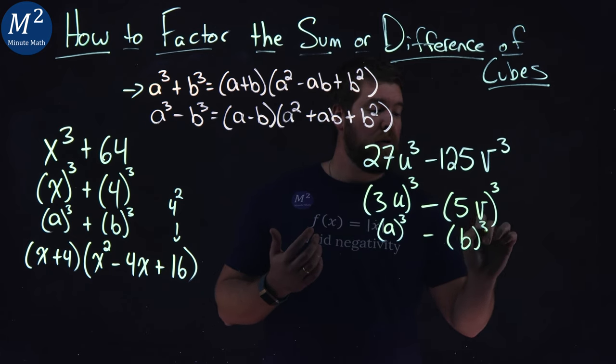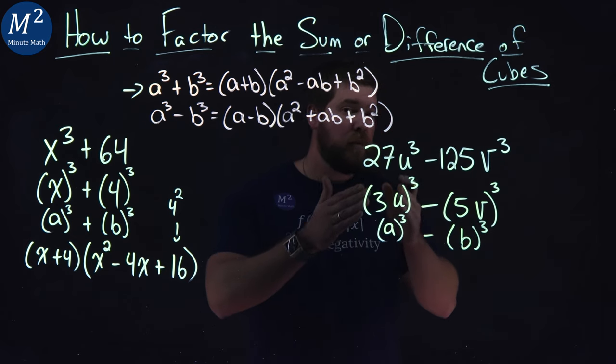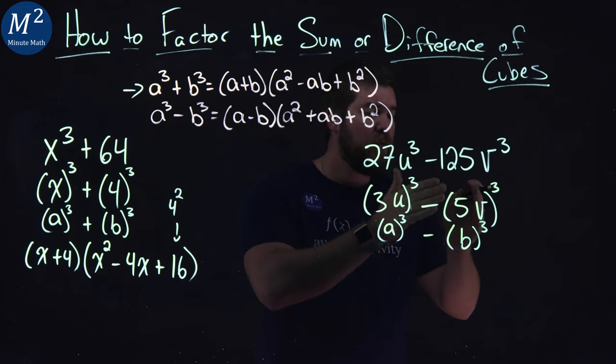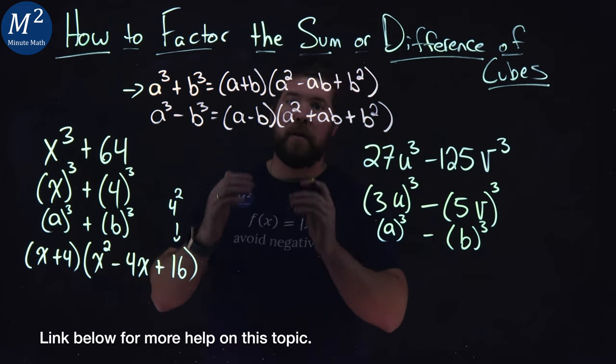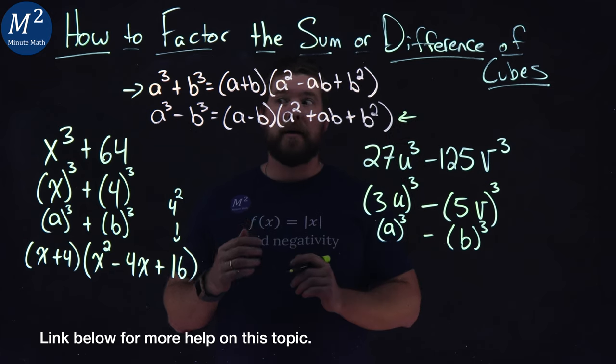Well a b now all cubed. So we have an a value 3u, b value of 5v. We can apply our formula. The second one here.